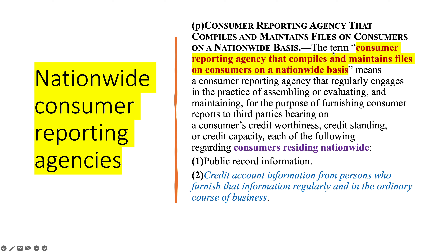What about a nationwide consumer reporting agency? There is such a thing — under subsection P — a consumer reporting agency that compiles and maintains files on consumers on a nationwide basis. It could be public record or credit account information from persons who furnish that information, called furnishers — that would be Bank of America, Midland Credit, Portfolio Recovery, NationStar, Mr. Cooper. If they report nationwide, then they are a nationwide consumer reporting agency.